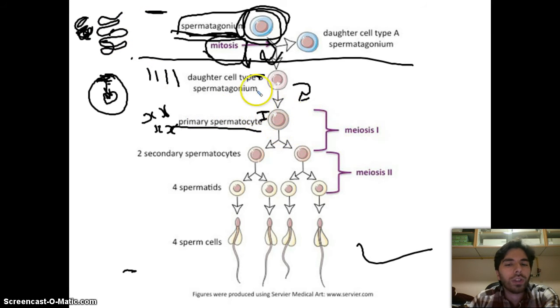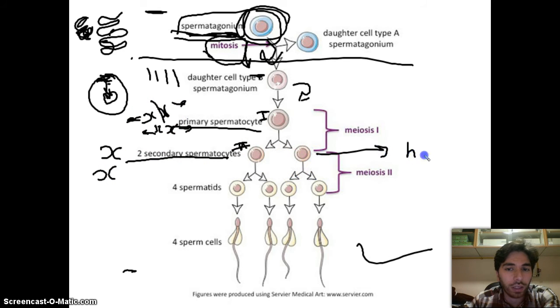Then meiosis one occurs. We go through prophase one, metaphase one, anaphase one. If you remember, anaphase one splits the homologous chromosomes, so these will go to one side and these to the other. Then we get secondary spermatocyte, or spermatocyte two, where each one will have two chromosomes that are two sister chromatids. Instead of four, we turn into haploid cells.